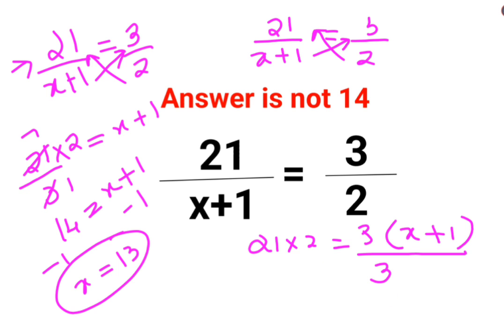It's so easy, right? So what happens is this 3 gets cancelled, this is 1 and 7. So now you can say 7 multiplied by 2 is 14 equals to x plus 1. Like I said, subtracting 1 from both sides, the value of x comes out to be 13.